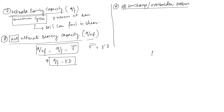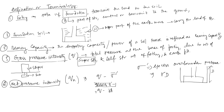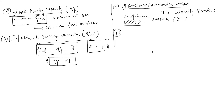What is overburden pressure? This is the foundation. If you have some load, then you get overburden pressure. It is the intensity of vertical pressure — sigma dash — and is referred to as overburden pressure. That is the tenth definition.